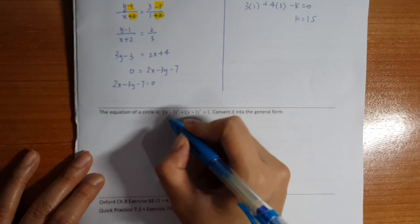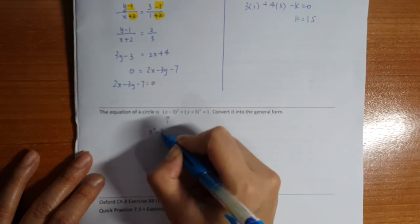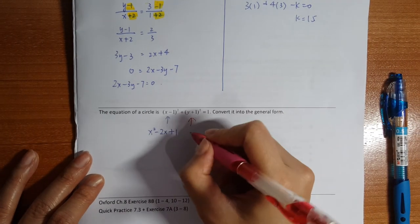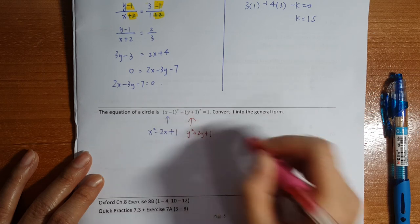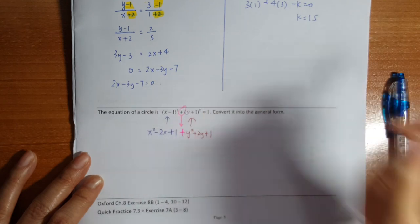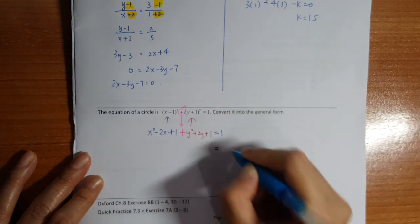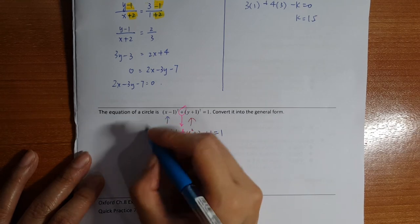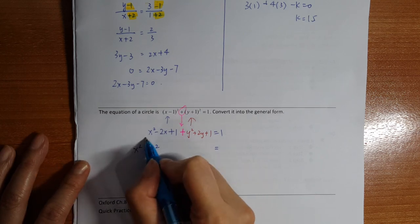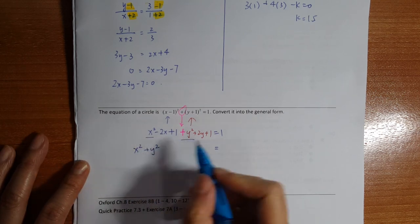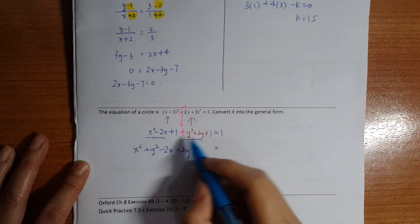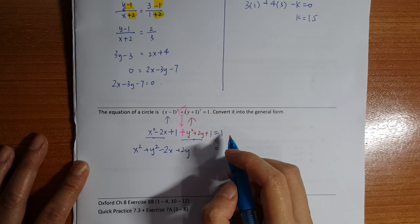So expand these brackets. I'll add them here, equals to 1. And then x square first, y square first. Usually when expanding, I'm afraid I'll miss something, so I will highlight. I highlight what I've expanded so I'm afraid I'll miss something. 1 plus 1 minus 1, so it's plus 1.